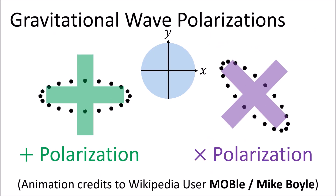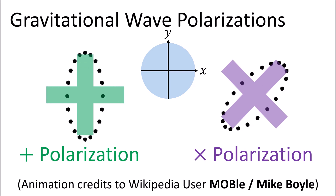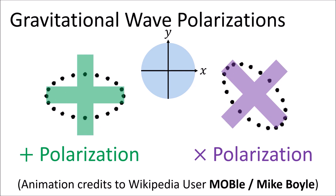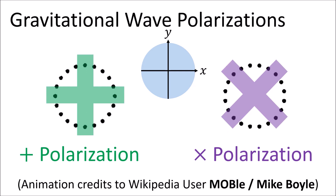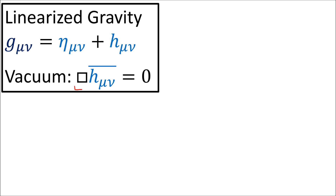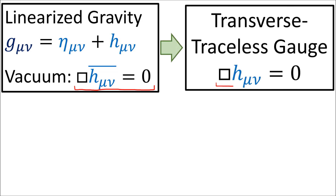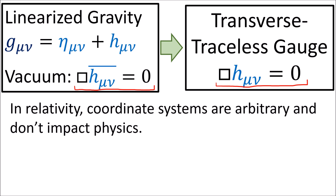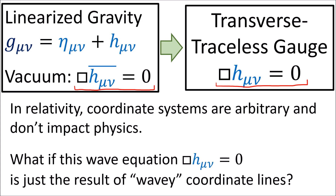So now it's finally time to see how these plus and cross polarized gravitational waves affect free particles as they pass by. But there's one issue I want to bring up first. We found that in linearized gravity, the h-bar components satisfy the wave equation in the vacuum. And in the transverse traceless gauge, this reduces to the ordinary h components satisfying the wave equation. But we know that in relativity, coordinate systems are arbitrary and don't play any role impacting physics. So it's worth asking: what if this wave equation is just the result of wavy lines in the coordinate system and not about real physical waves at all?